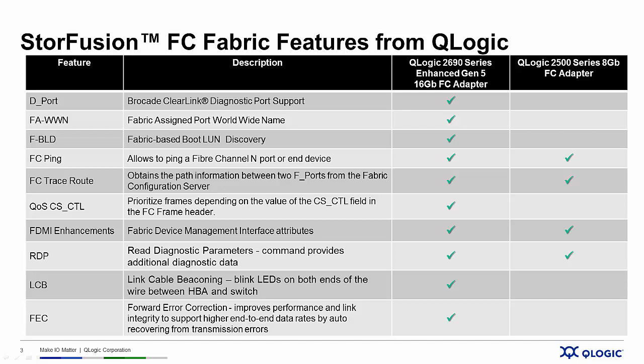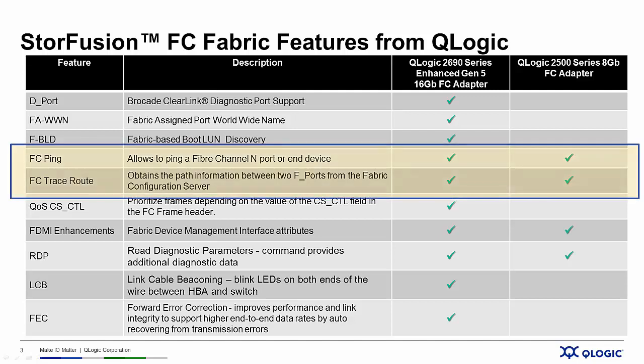We're going to focus this session on FC-Ping and FC-TraceWrap. Note that while these two features are part of the overall StoreFusion feature set for enhanced Gen 5 fiber channel, they also happen to be supported with Q-Logic 8-gig fiber channel adapters when connected to Brocade Gen 5 fiber channel fabrics.